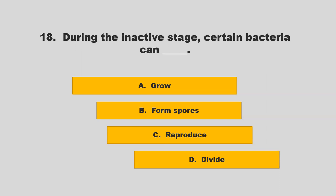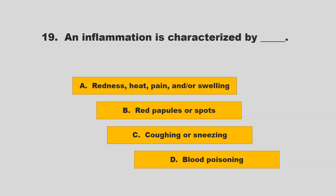During the inactive stage, certain bacteria can blank. Options: grow, form spores, reproduce, or divide. The correct answer is B: form spores.